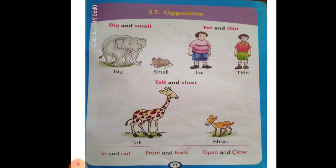Opposites. Big and small. See the big elephant, children. The big elephant is so big, so fat, so huge. And see the rat in front of it — so small. So the elephant is big and the rat is small.